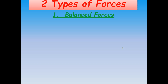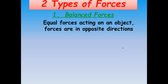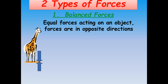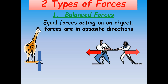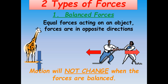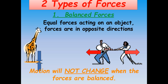We're going to talk about two different types of forces, starting with balanced forces. Balanced forces are when you have equal forces acting on an object, but in opposite directions — like this giraffe standing on the ground. There is a downward force of weight, but the ground applies an equal and opposite push. So the giraffe stands on the ground instead of falling through it. The result of balanced forces is that the motion of the object does not change.